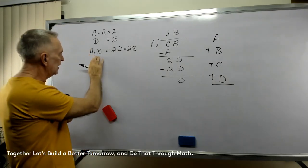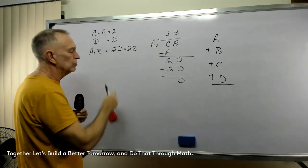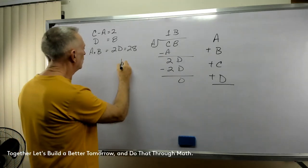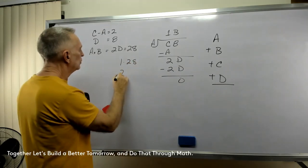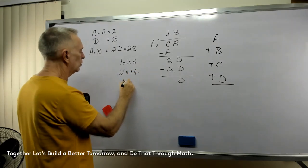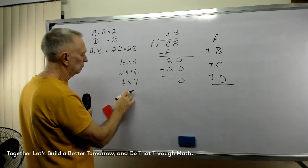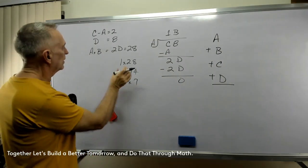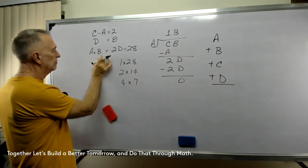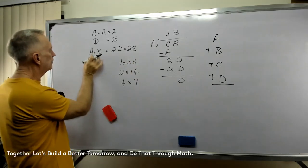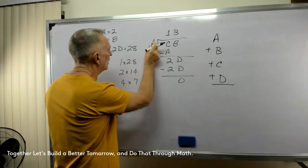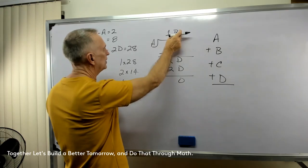Having said that, A times B equals 28. What are the factors of 28? Well: 1 times 28, 2 times 14, 4 times 7. That's it. Now, can I use 28 for A? No. Can I use 28 for B? No, it's two digits. I could put two digits in one position but not the other, so we can't use those.